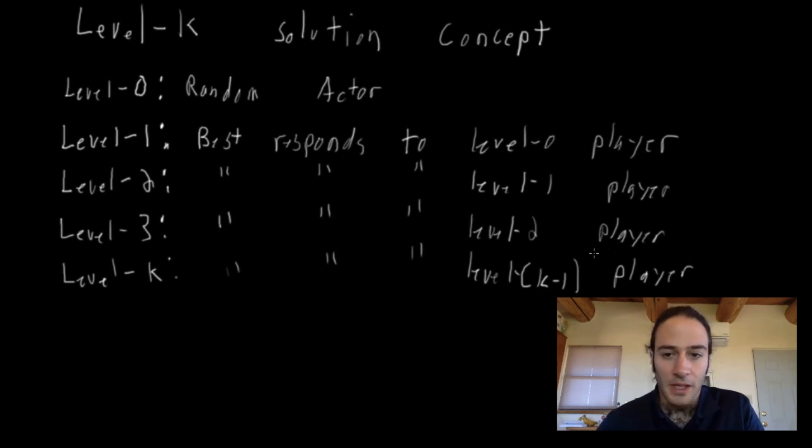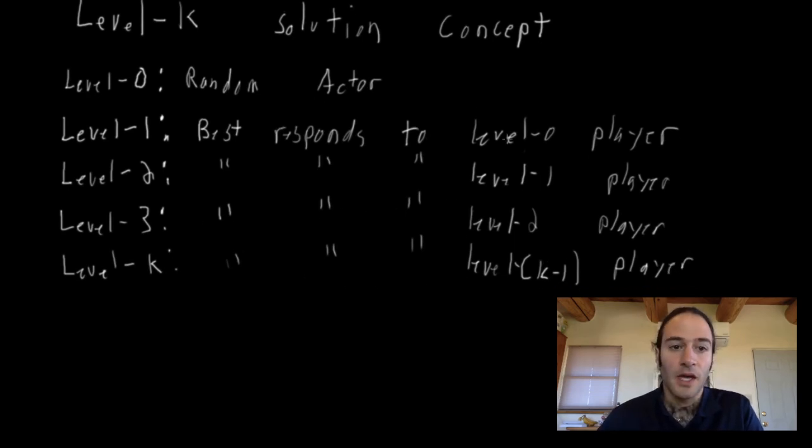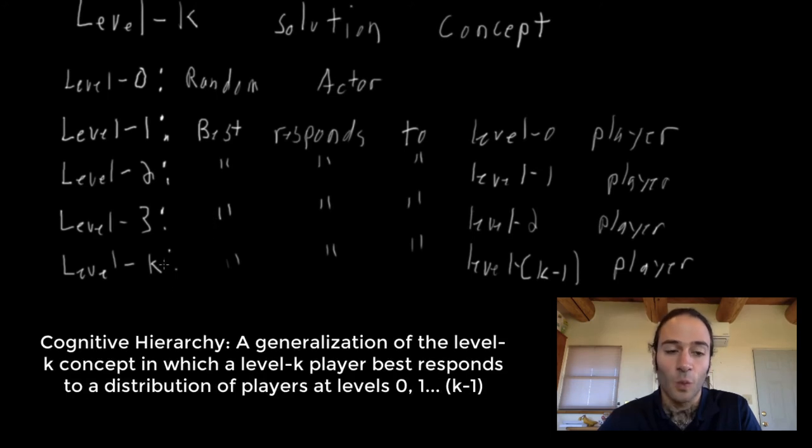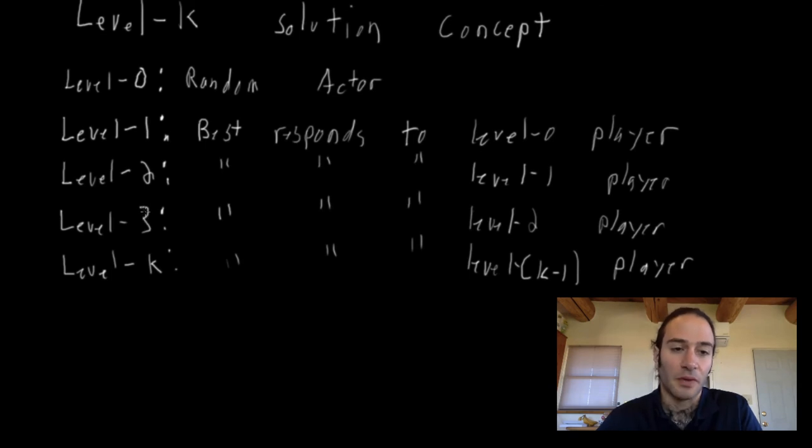So there's a couple of things that I want to point out about this. There's another solution concept known as the cognitive hierarchy, which is very similar to level K. But instead of players just best responding to the player one level below them, it best responds to a distribution of players below them. So for example, a level three player might say, I think half of the people are level two, 25% of the people are level one, and 25% of the other people are level zero. So that's known as cognitive hierarchy.